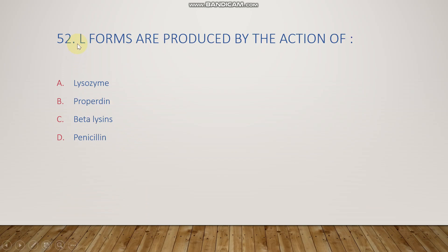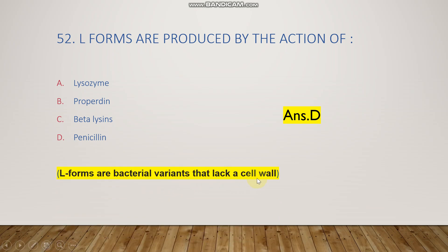The next question: L-forms are produced by the action of lysozyme, properdin, beta-lysine, or penicillin? The right answer is option D, penicillin. L-forms are bacterial variants that lack a cell wall — 'L' means lack. Two types of L-forms exist: protoplast, for gram-positive bacteria that lack a cell wall, and spheroplast, for gram-negative bacteria that lack a cell wall.